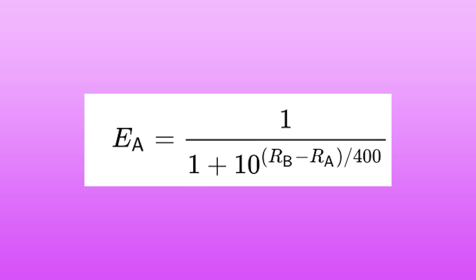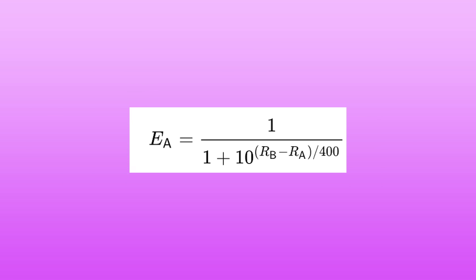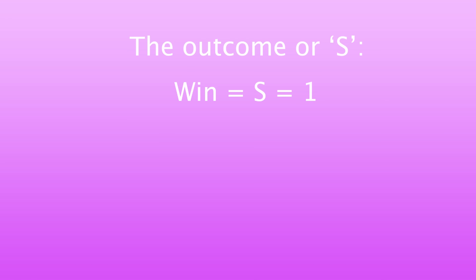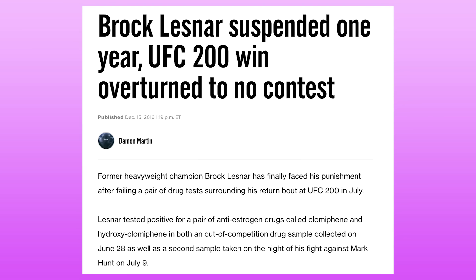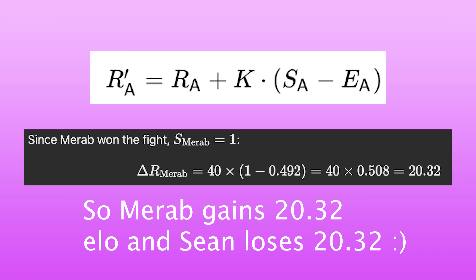For my project, I'll be using a K value of 40. We then get to the expected score, which is the probability that a fighter will win based on their current rating relative to their opponent's rating. It's a value between 0 and 1, representing the predicted outcome. The expected score for fighter A is calculated using the formula shown, where R sub A and R sub B are the ratings for fighters A and B. A win is scored as 1, or 100% of the points. A draw is 0.5, half the points, and a loss is 0% of the points. For a no contest, each fighter will just get the points they put into the pot. The higher rated fighter will risk more points because they have a higher expectancy to win, and the lower rated fighter will risk less points because their expectancy to win is not as high.